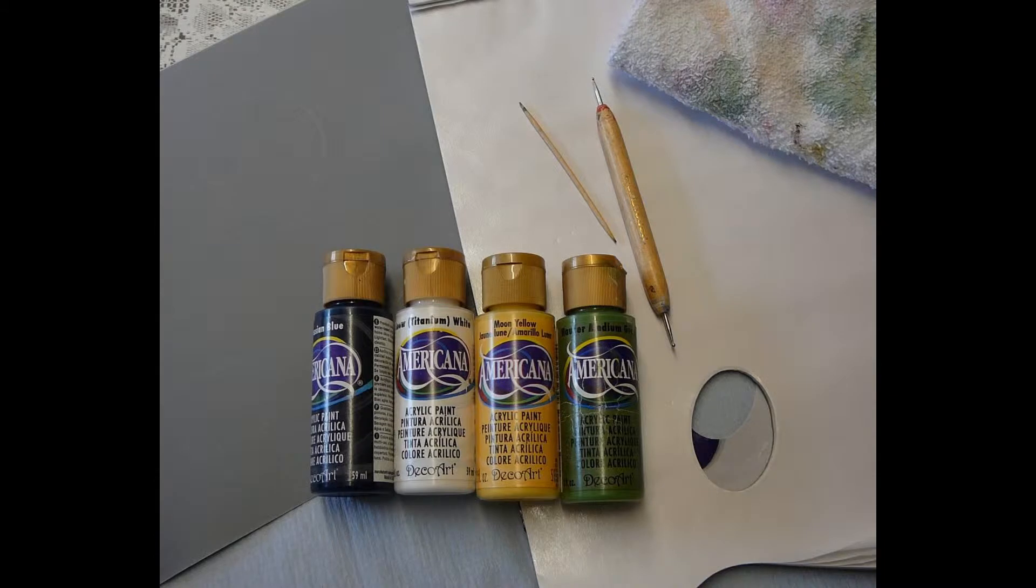All you need is a palette pad, stylus, cocktail stick and kitchen roll or rags for wiping the paint off the dotting tools and various DecoArt Americana paint. The daisies on the candlestick use titanium white, moon yellow, Prussian blue and medium Hauser green.